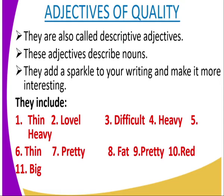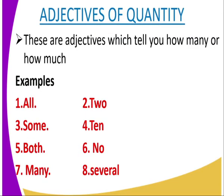Examples of adjectives of quality include: thin, lovely, pretty, difficult, heavy, fat, red, and big. When we talk of quality, we describe the nouns we are talking about. For instance, 'thin' tells us more about what we are describing; 'lovely' tells us more about what we are describing; 'heavy' tells us about the quality of a noun.